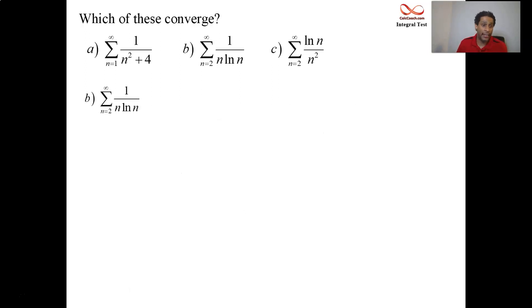The function, by replacing the n's with x's, we get 1 over x log x. It's continuous, so long as we're greater than 2. It's positive. It's decreasing. We can use it to see what happens with the improper integral from 2 to infinity.